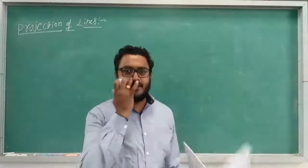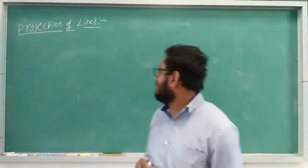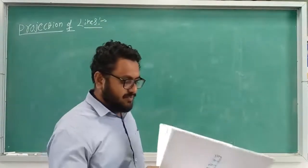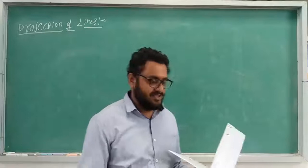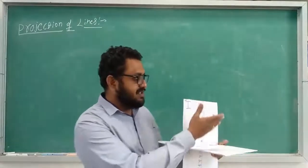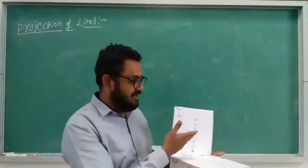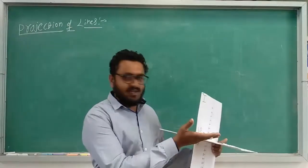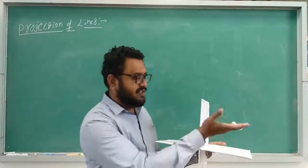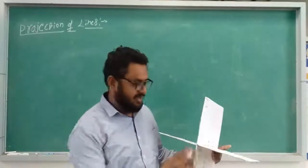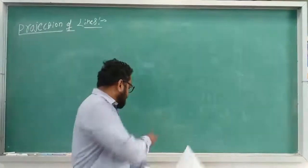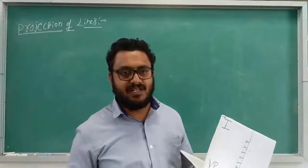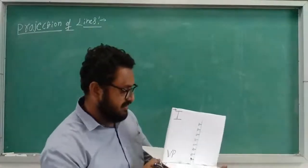In this class we are going to discuss the projection of lines. We will now do problems on the first quadrant, that is first angle projection. We will keep the object in the first quadrant and write the projection in front view, top view, and side view. The first quadrant is defined as above HP and in front of VP. We will discuss how different views appear when a line is kept in the first quadrant in different positions.